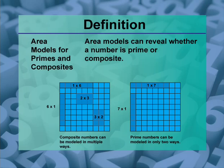Area models for primes and composites. Area models can reveal whether a number is prime or composite. In the example shown, you can see models for a composite number and a prime number.